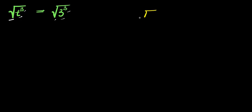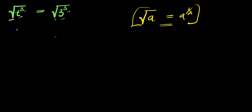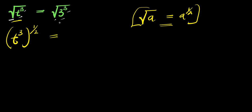Now, if you have the square root of a, this equals a to the power of one over two. So the square root of t cubed is the same thing as having t cubed raised to the power of one over two. And the square root of three cubed is the same thing as having three cubed raised to the power of one over two.